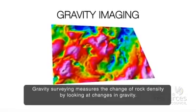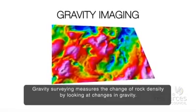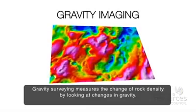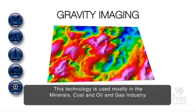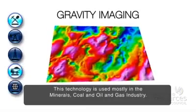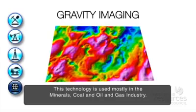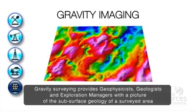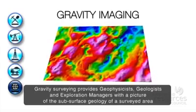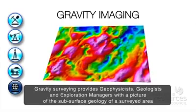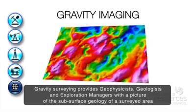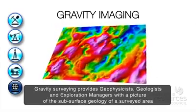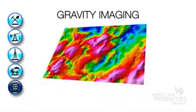Gravity surveying measures the change of rock density by looking at changes in gravity. This technology is used mostly in the minerals, coal and oil and gas industry. Gravity surveying provides geophysicists, geologists and exploration managers with a picture of the subsurface geology of a surveyed area so they can see what's underground.